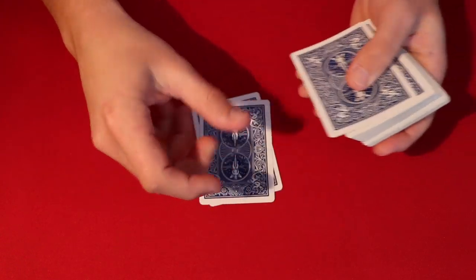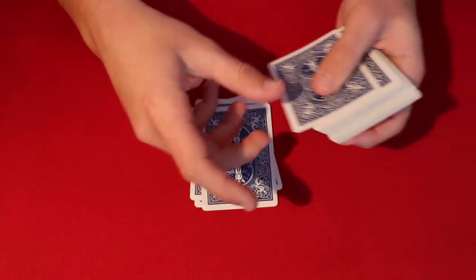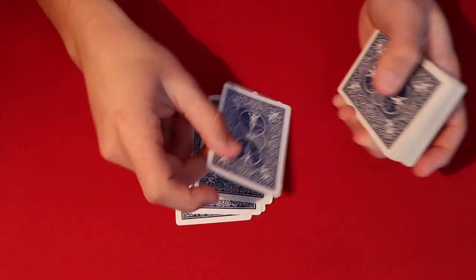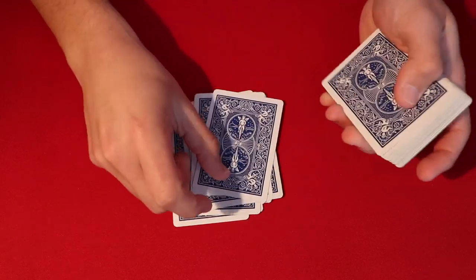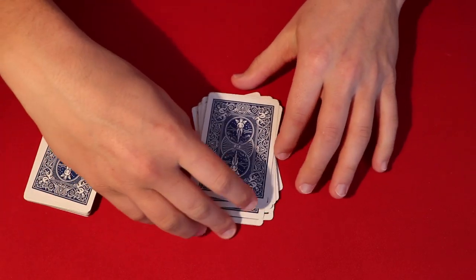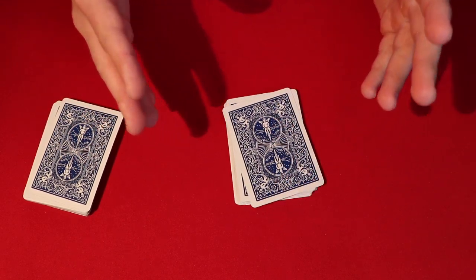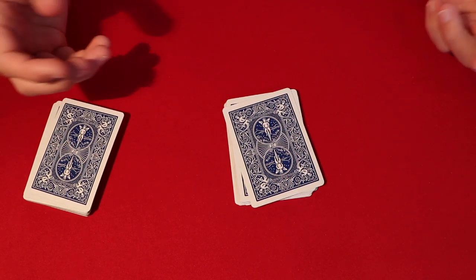So you deal down 1, 2, 3, 4, 5, 6, 7, 8, 9, 10, 11, 12, 13, 14, 15, 16, 17, 18. Alright, so out of 10 and 20, your spectator happened to pick 18. And let's mix it up a little bit more.